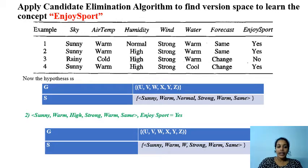Now our current hypothesis is these two. We got the next instance as positive. Let's check with G and S. We have to accept this second instance by both G and S. G is having any values for attributes, so G accepts this training instance.